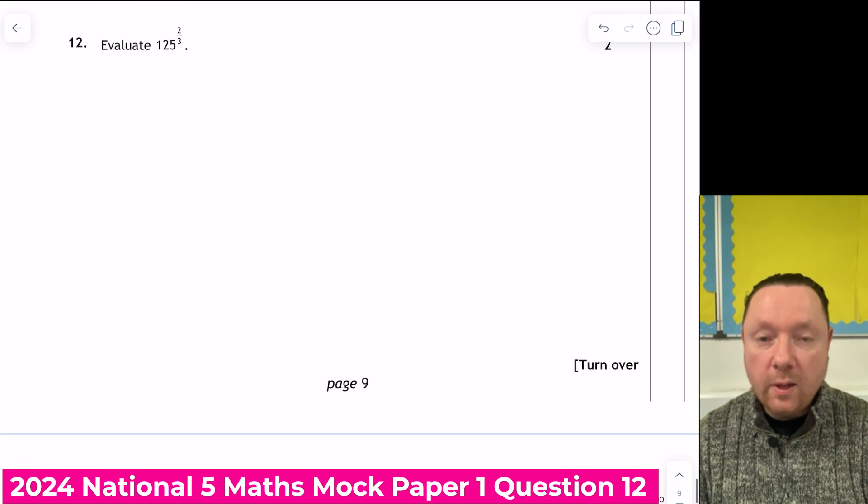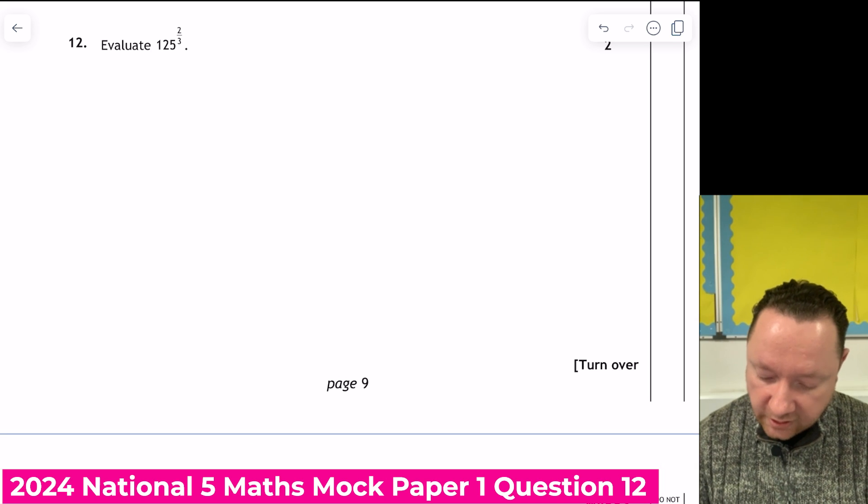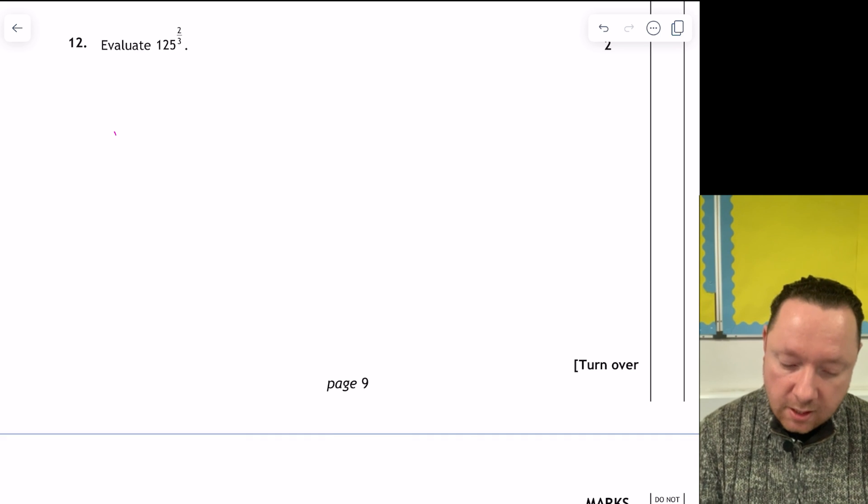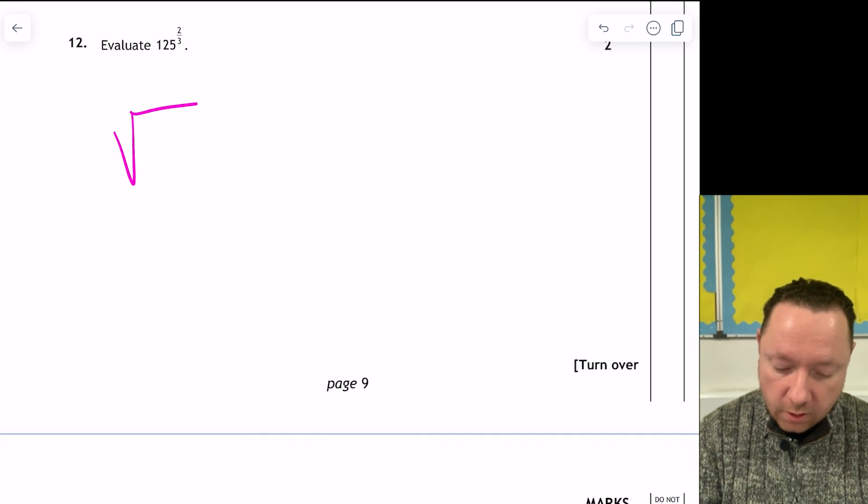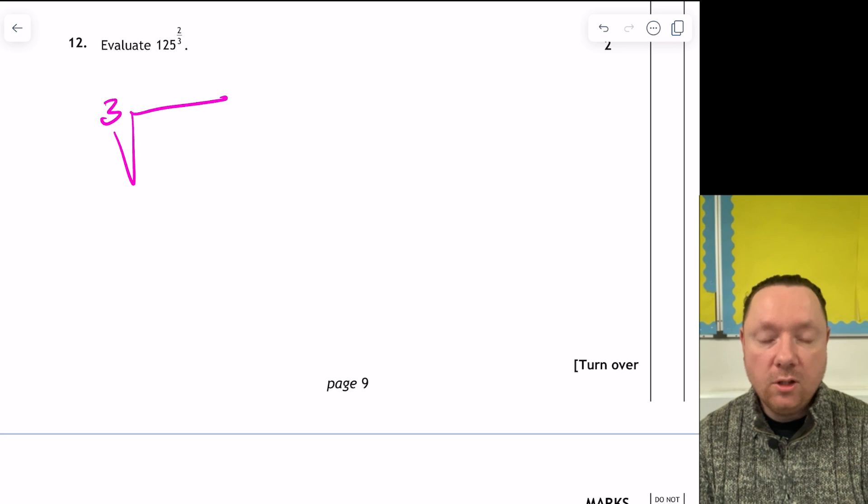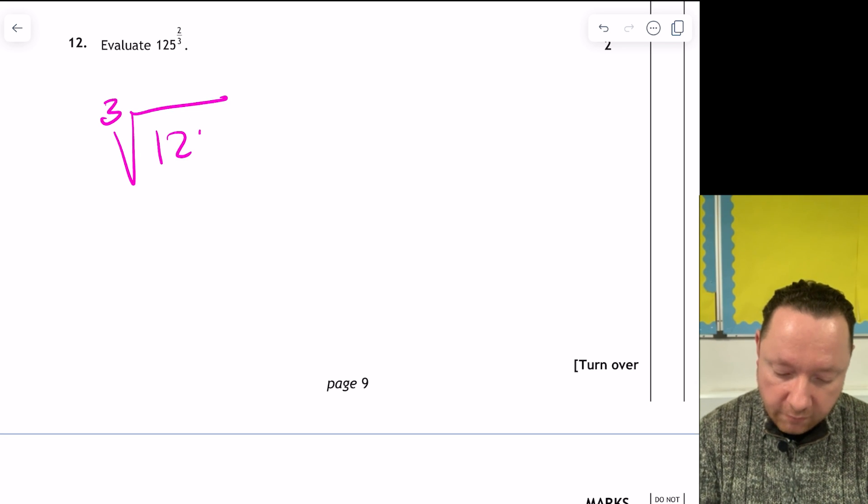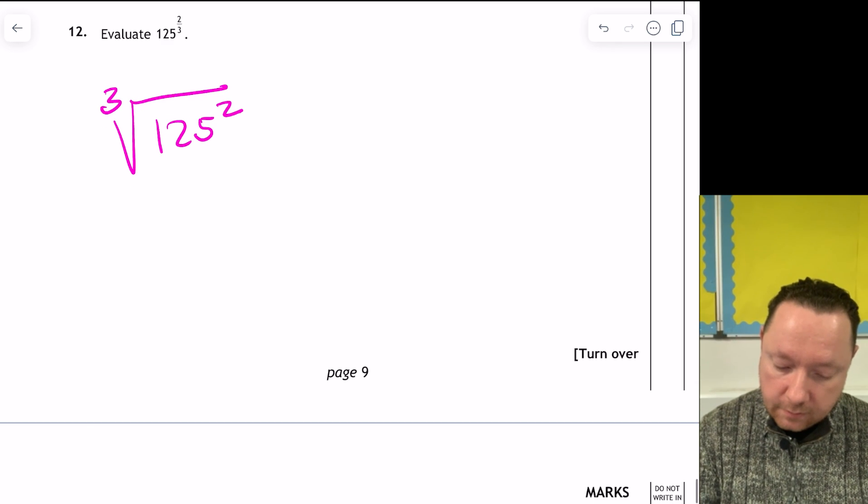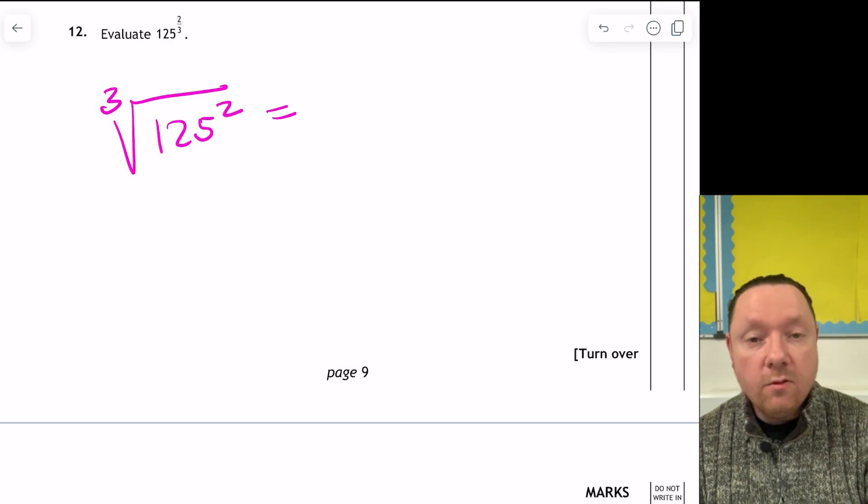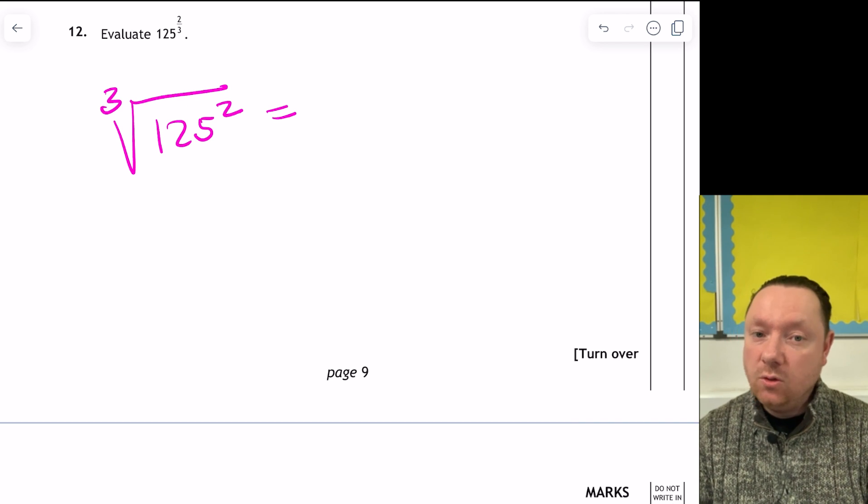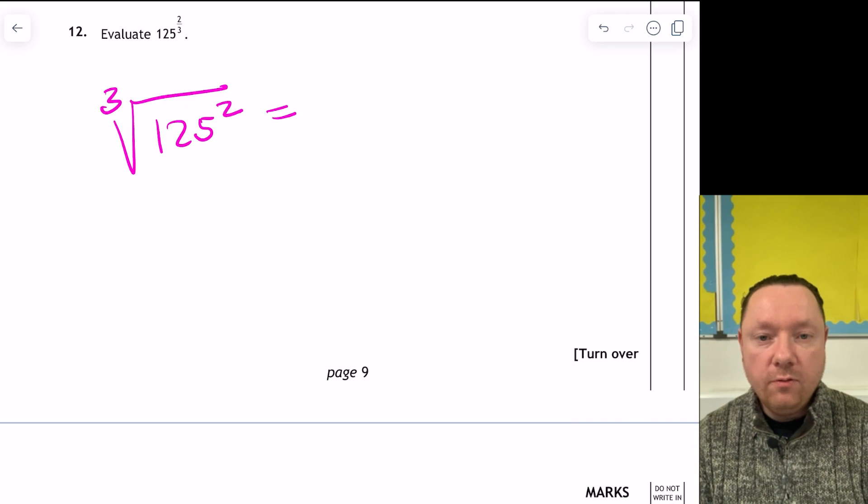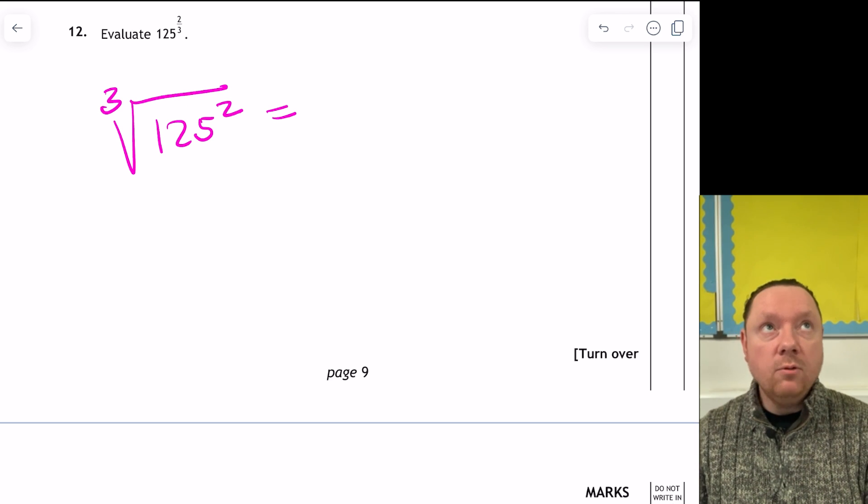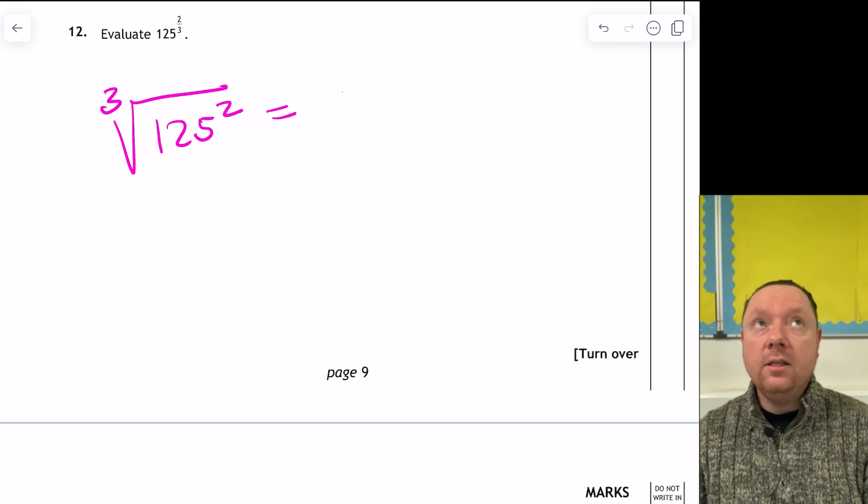Question 12. Evaluate 125 to the power of 2 thirds. So this is our indices. But we need to know what a fractional power means. 1 over 3 means a root. And it's a cube root because the 3 is on the denominator of 125. And that's squared. The 2 just goes along for the ride. So I can cube root first or last. It makes no difference. So I'll cube root 125.